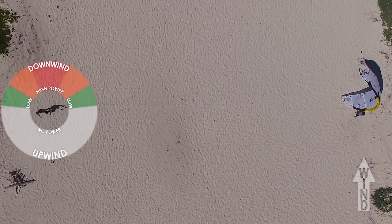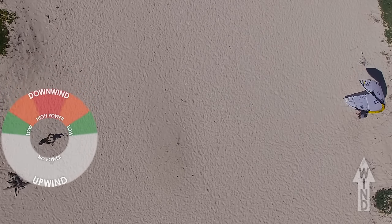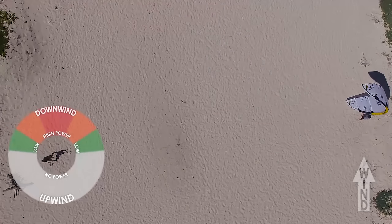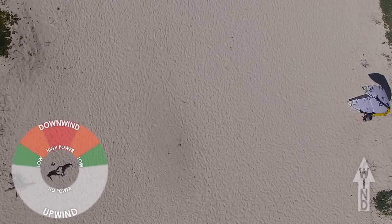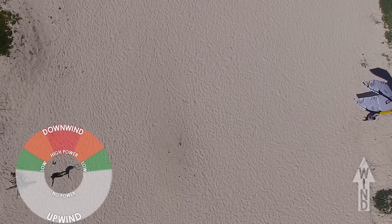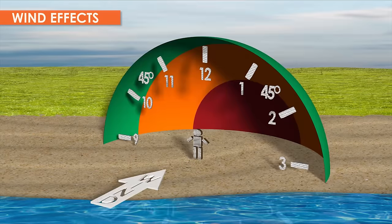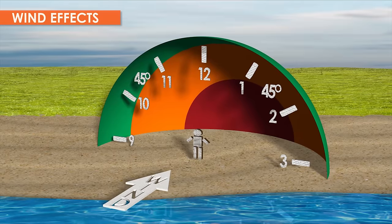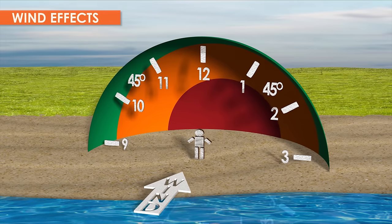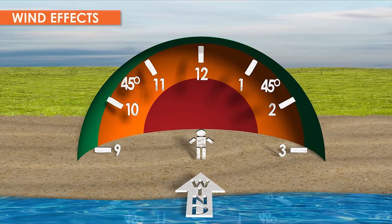The ground level window is a useful concept when learning to launch your kite. When the wind direction changes, so does the location of the window.